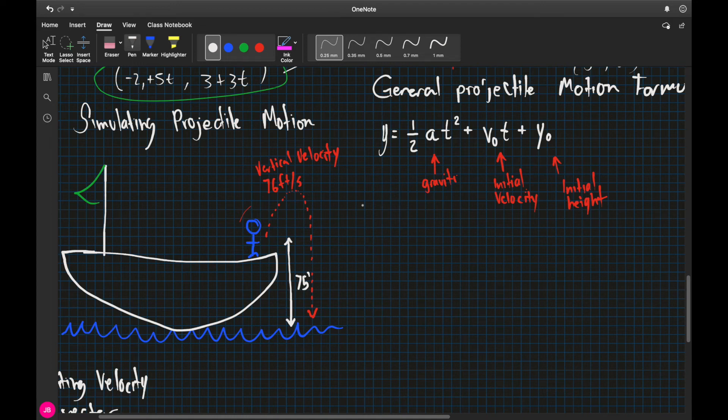Let's talk about one of the coolest ways to use parametric equations, which is when we're talking about simulating projectile motions. So this is talking about finding the place of an object in some sort of movement at a particular point in time.